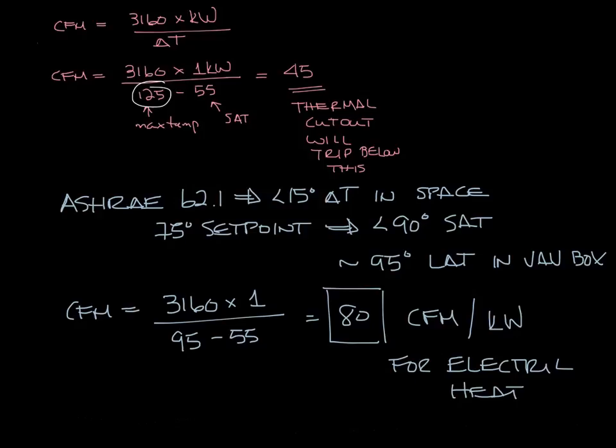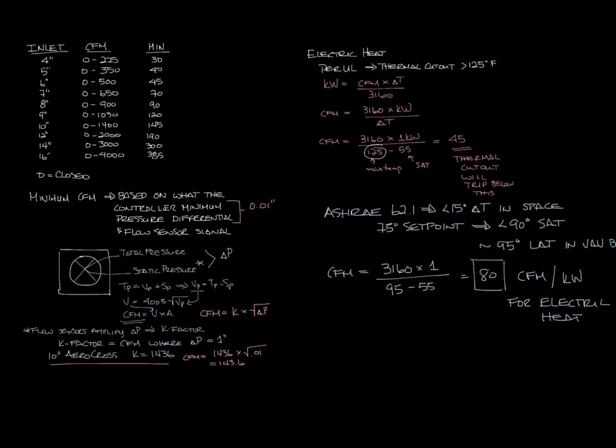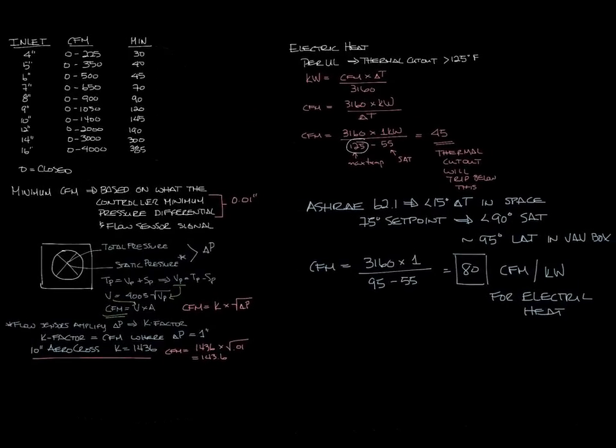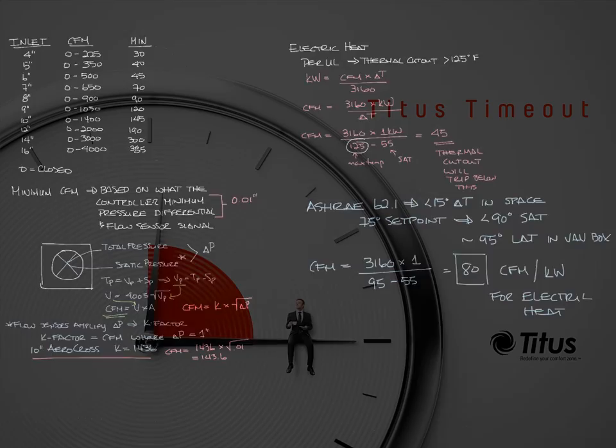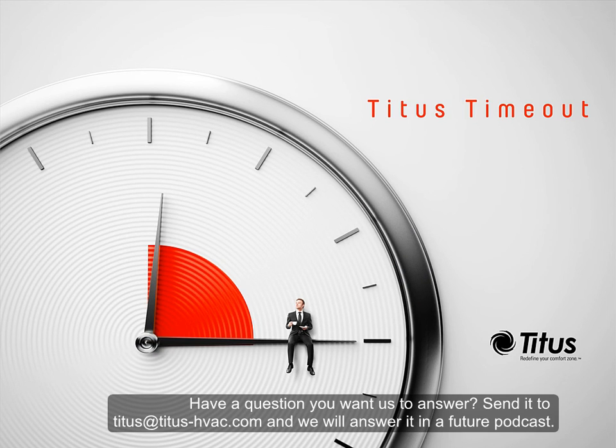Because of this we recommend that you have at least 80 CFM per KW in electric heat applications. That covers VAV box minimum CFMs. Don't forget to subscribe to our YouTube channel and thanks for taking the timeout with us.